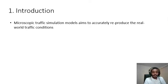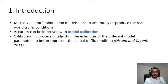Like any other transport model, microscopic traffic simulation models also aim to accurately reproduce the real world traffic conditions. This is largely dependent on the accuracy of data that we input to the simulation, but accuracy can be further improved with model calibration. Model calibration is a process of adjusting the estimates of different model parameters to better represent the actual traffic conditions.